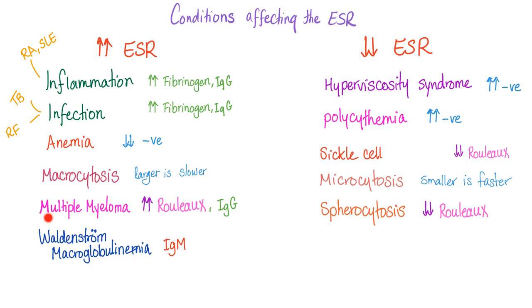Other conditions that increase ESR: anemia, macrocytosis, multiple myeloma, and Waldenström's macroglobulinemia. Conditions that decrease ESR include hyperviscosity syndrome; polycythemia, because more red blood cells means more negative charges and more repulsion; sickle cell disease due to decreased rouleaux formation; microcytosis (smaller is faster); and spherocytosis due to decreased rouleaux. In multiple myeloma, increased rouleaux causes cells to stack together, sink, and sediment together, raising the ESR.